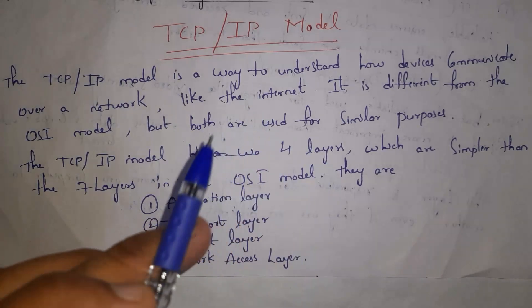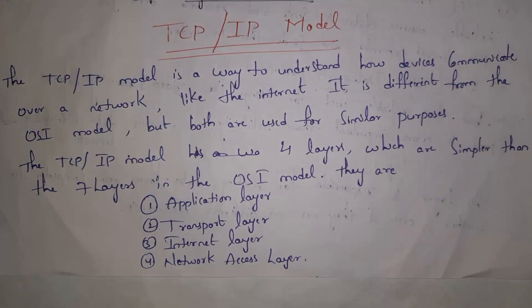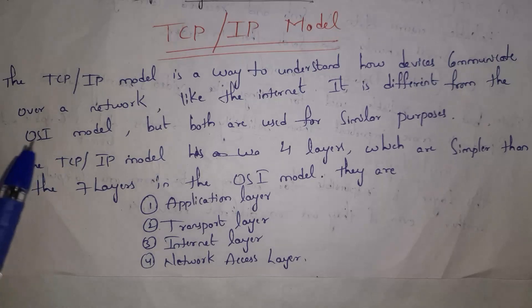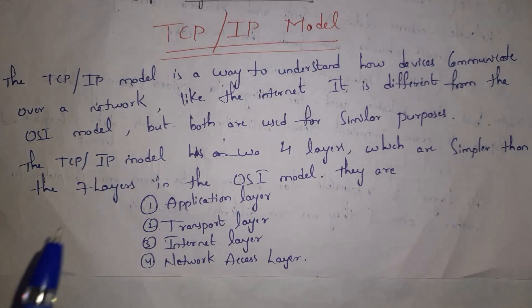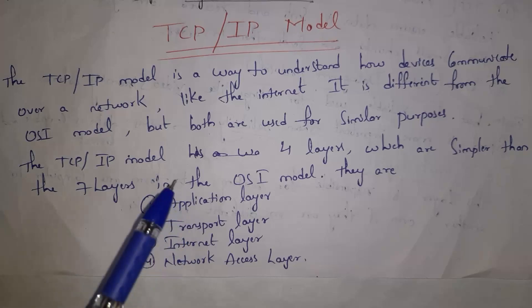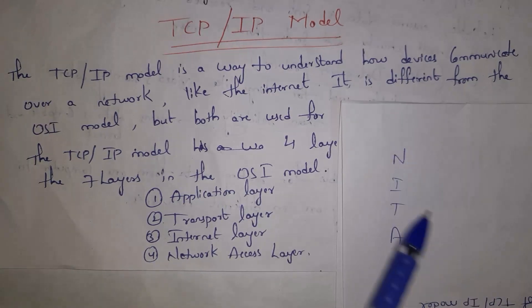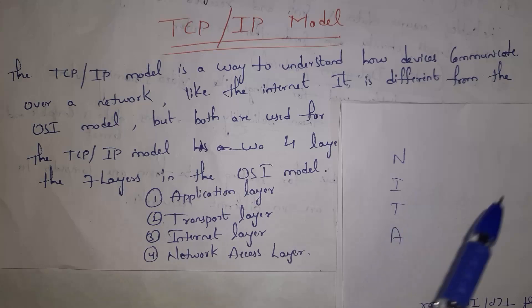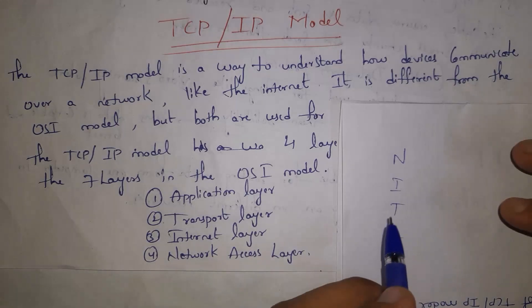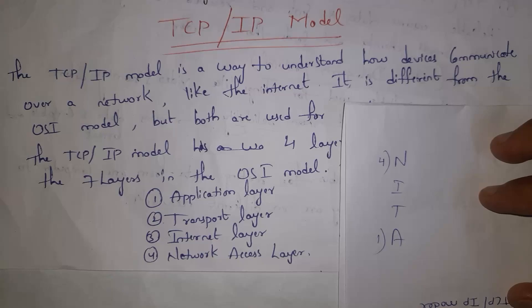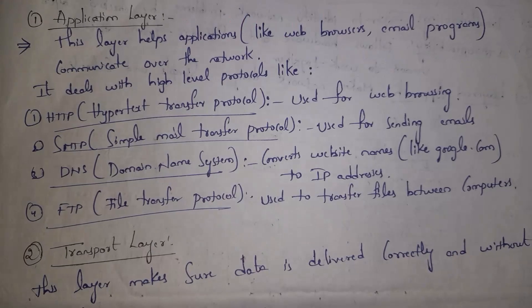The OSI model contains seven layers, whereas the TCP/IP model contains only four layers: Application Layer, Transport Layer, Internet Layer, and Network Access Layer. You can remember this as 'ATIN' — Application, Transport, Internet, Network Access — where the starting layer is the Application Layer and the last layer is the Network Access Layer.